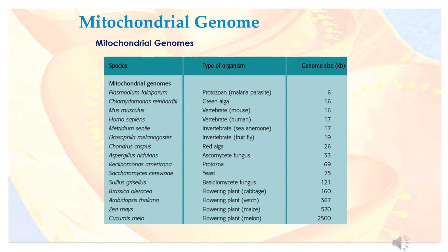Chondrus crispus, a red alga, has a mitochondrial genome of approximately 26 kilobases. Aspergillus nidulans, a fungus, has a genome of approximately 33 kilobases.